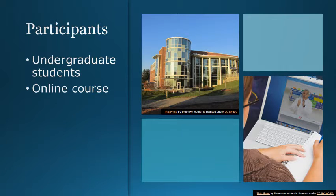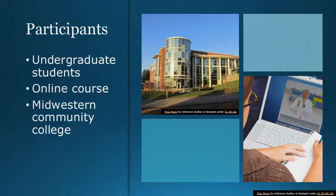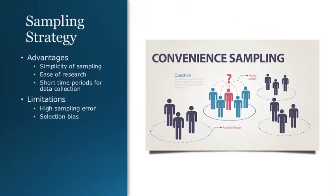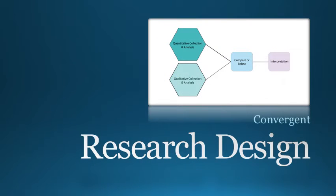Participants will be undergraduate students in an online course at a Midwestern community college. The sampling strategy will be convenience sampling. Advantages include simplicity and the ability to collect data in a short time period, but limitations include high sampling error, selection bias, and the inability to generalize to a larger population. The research design is a mixed methods convergent design, meaning I will collect quantitative and qualitative data, then compare and relate that data after analyzing and interpreting it.